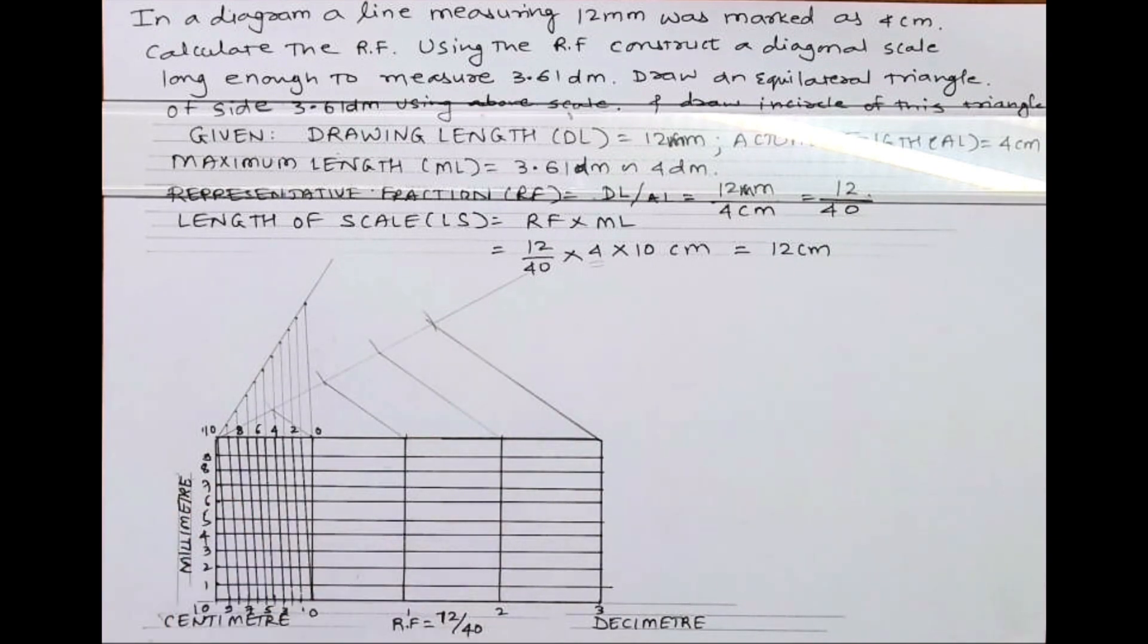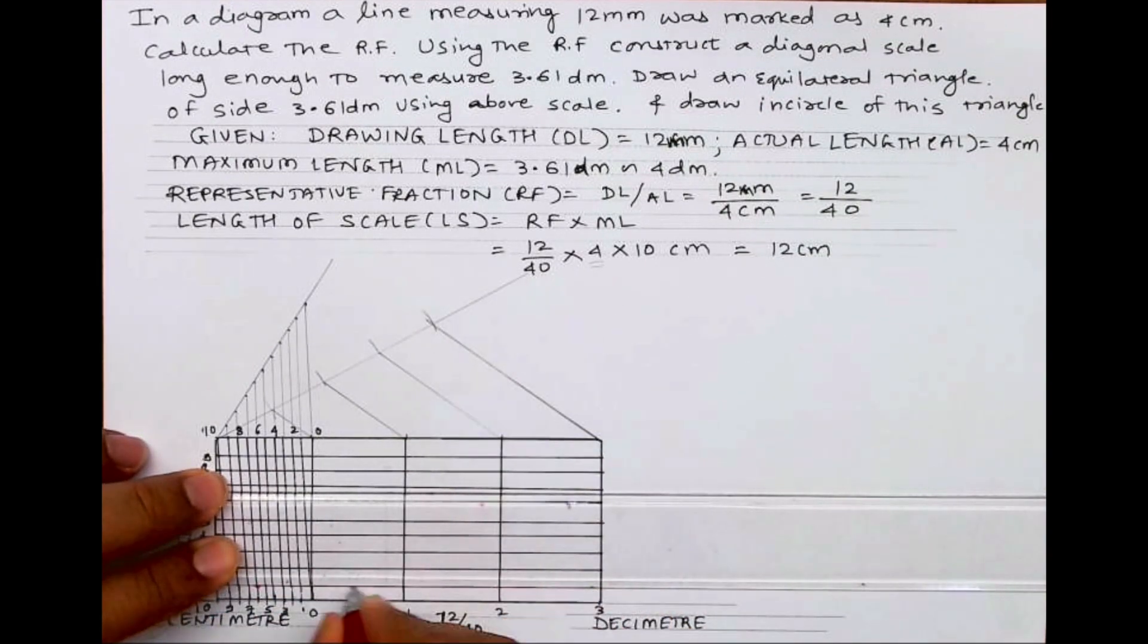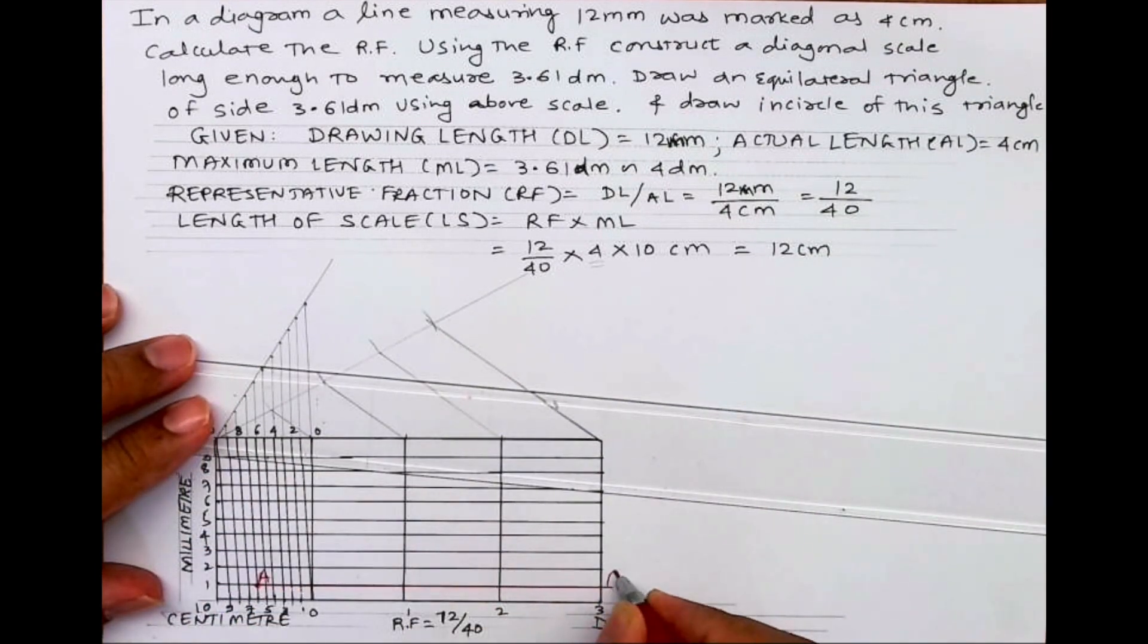We can do the naming like this: millimeter 0 to 10. Now we need to mark 3.61, so 3, 6, and 1. So this distance is 3.61 decimeter. This is AB.